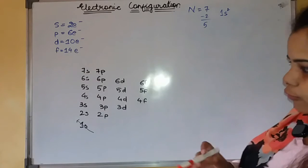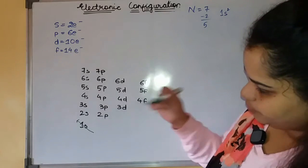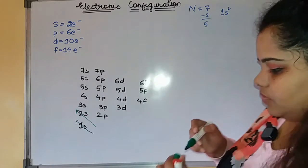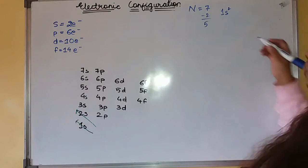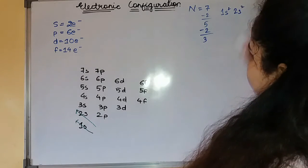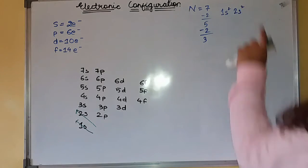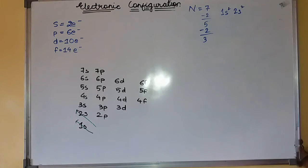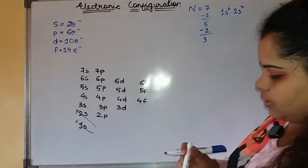Then second, you have to fulfill 2s. Then you will write 2s. Subtract 2. Remain is 3. You will write here 2. 2 plus 2 is 4. And how much you are left with is 3.